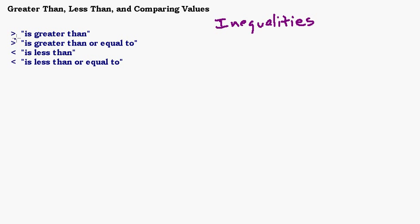Our first symbol is an arrow pointing to the right — that means 'is greater than.' If that symbol has a line under it, it means 'is greater than or equal to.' If it's pointing to the left, you read it as 'is less than.' And if it's pointing to the left with a line under it, you read it as 'is less than or equal to.'